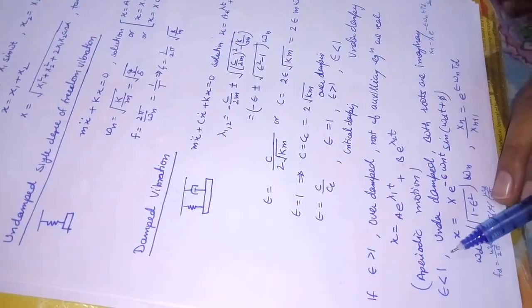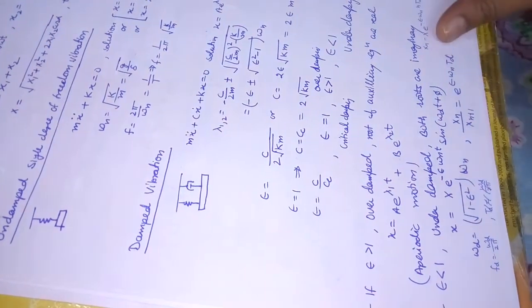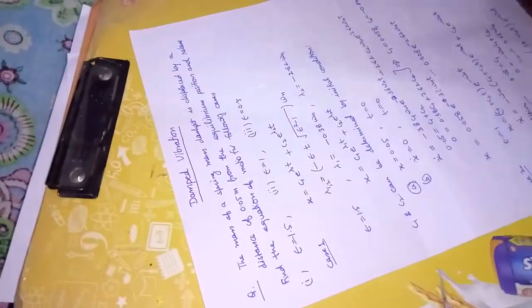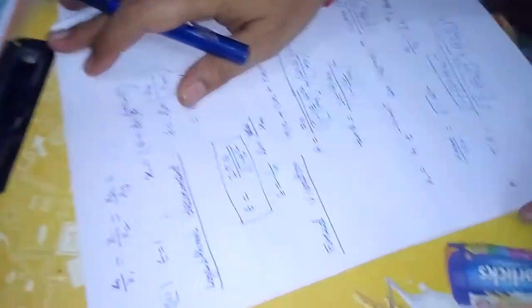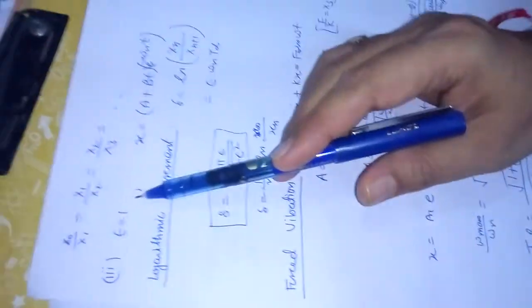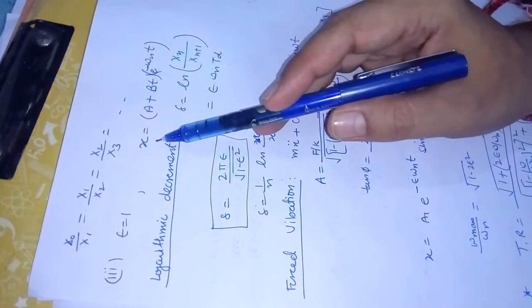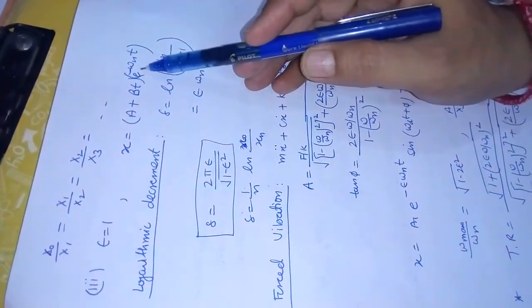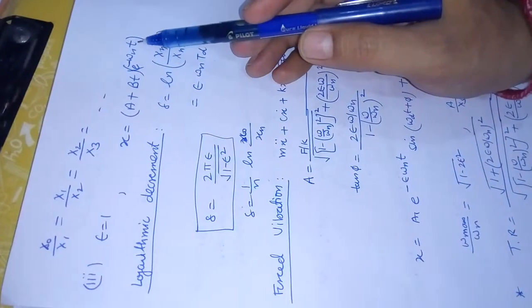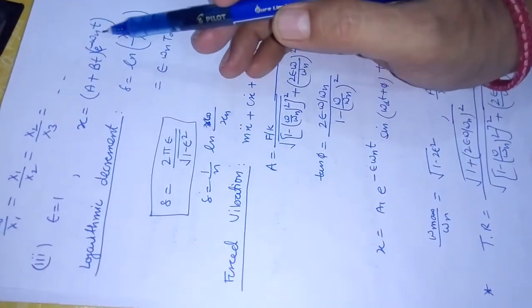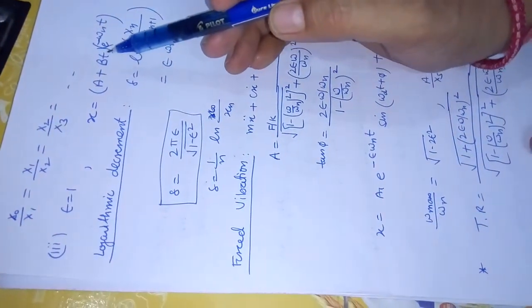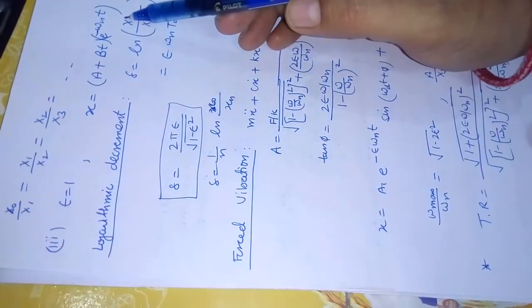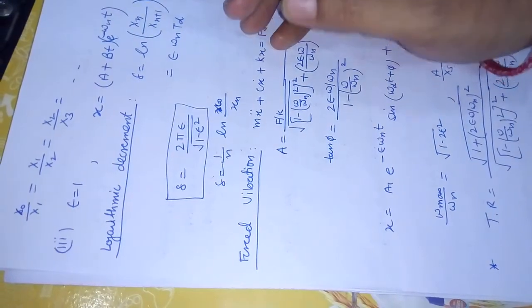The third case is when ε = 1, known as critically damped motion. The solution is x = (a + bt)e^(-ωₙt). These are the three cases: ε < 1, ε > 1, and ε = 1. We will now apply these to solve a numerical problem.